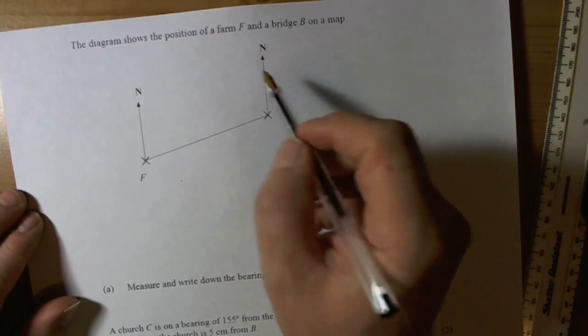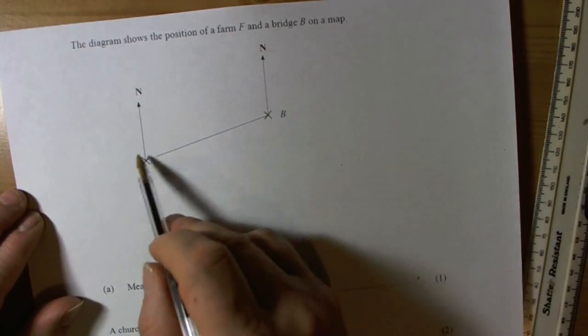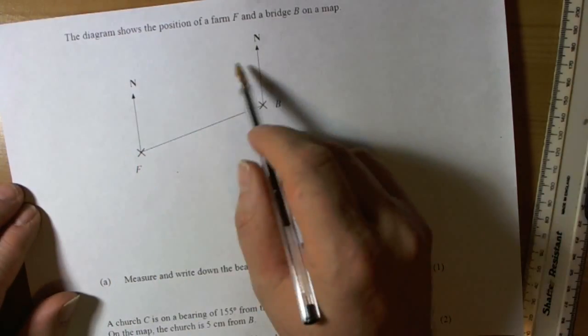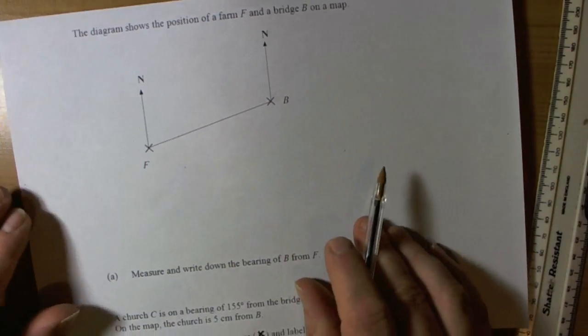Okay, so this question talks about the position of two places, a farm and a bridge. It's given me north lines, so that's strongly suggesting this question is going to be about bearings.